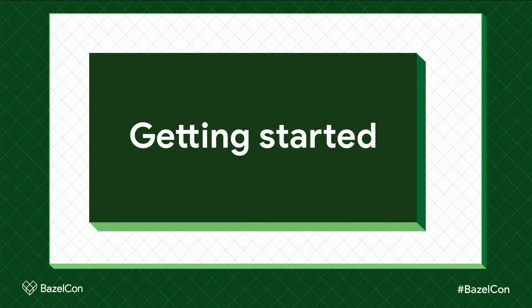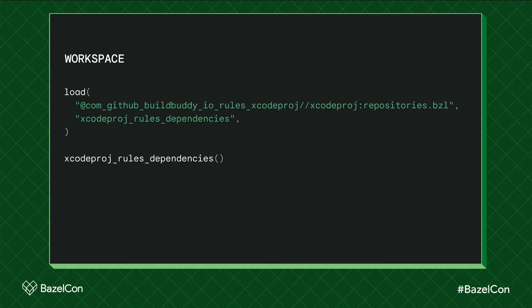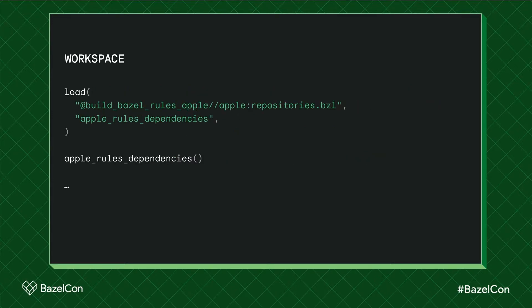There are only a few steps needed to get up and running with Rules Xcode Proj. First, in your workspace file, you need to add a dependency on Rules Xcode Proj. Then you need to load its dependencies, and its dependencies' dependencies. The release notes on GitHub provide an easy-to-copy snippet so you don't have to figure this out yourself. And later this year, hopefully, we'll have Bazel mod support as well.